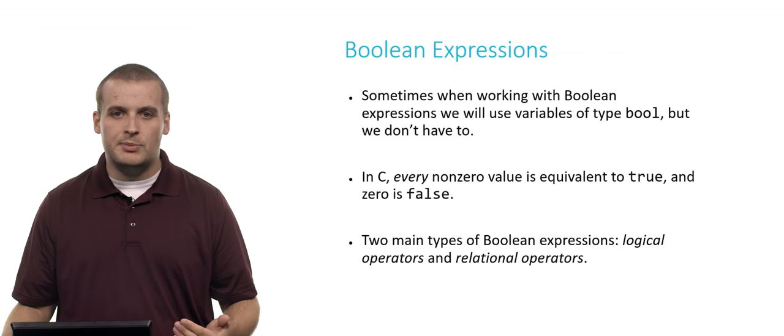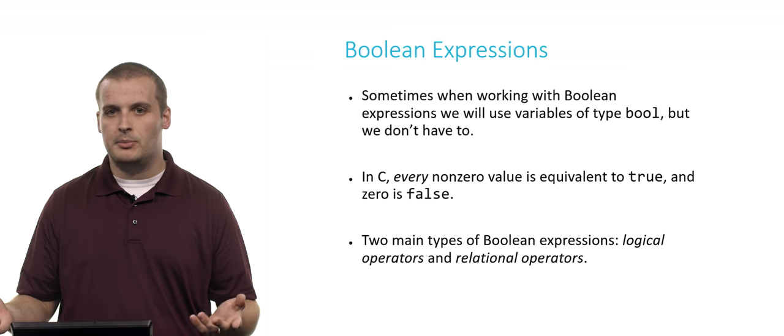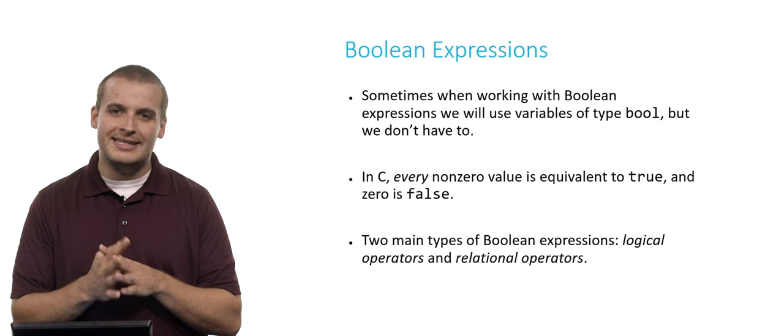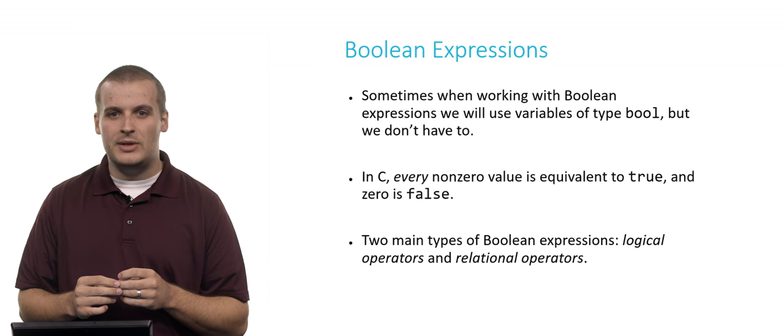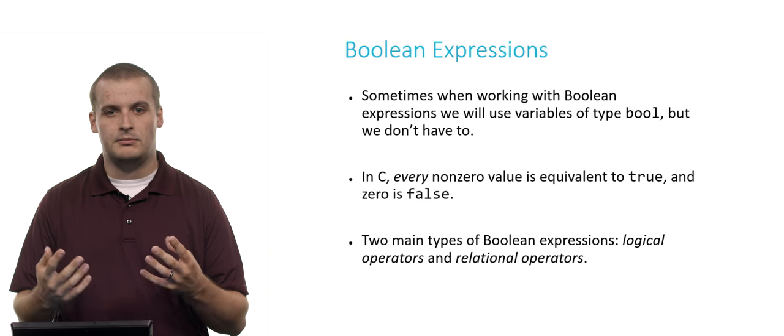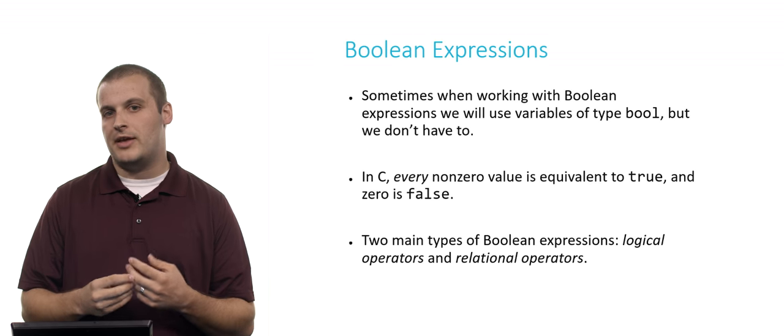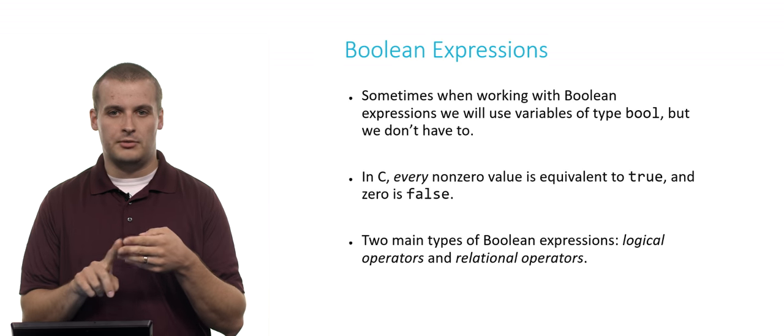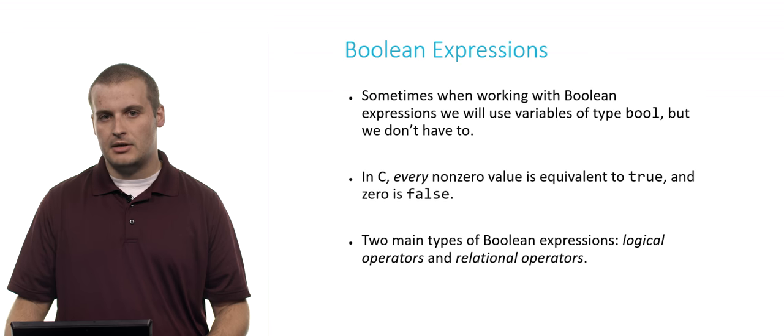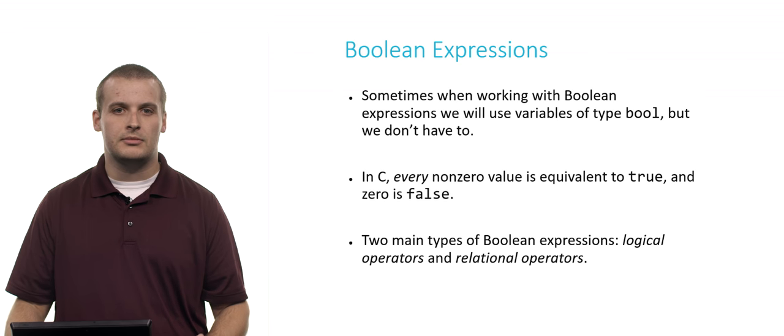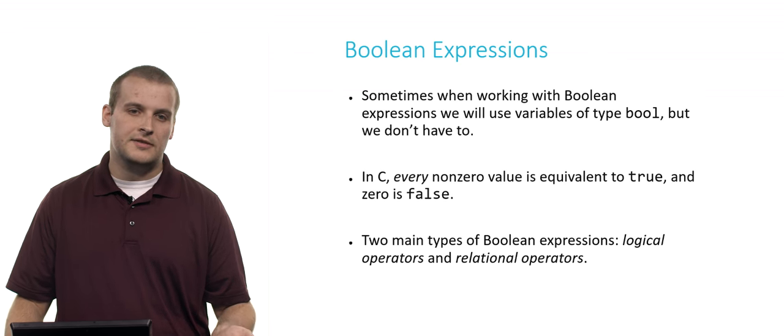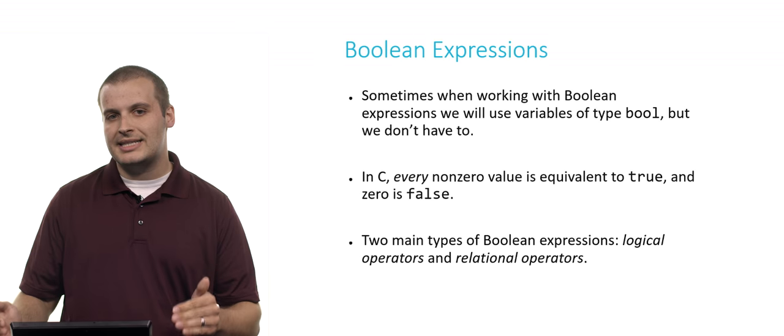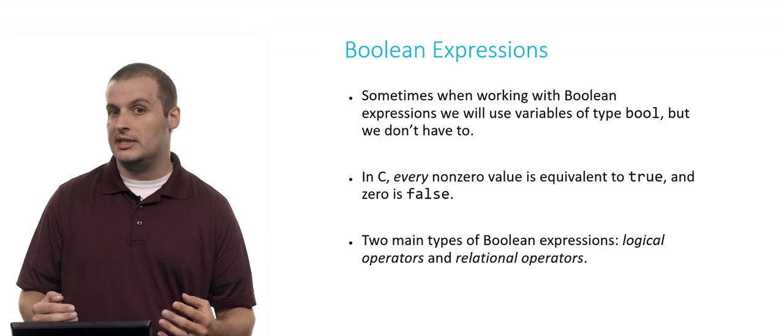Sometimes when we're working with Boolean expressions, we will use variables of type bool. But you don't always have to. As it turns out in C, every non-zero value is the same as saying true. If you had declared a variable of type Boolean and assigned it the value true, that's the same as declaring an integer and assigning it the value 1, 2, 3, or really any value whatsoever other than 0. Because in C, every non-zero value is true. 0, on the other hand, is false. This might come in handy later on to know, but just something to keep in mind. We don't always have to use Boolean type variables when we are working with Boolean expressions.